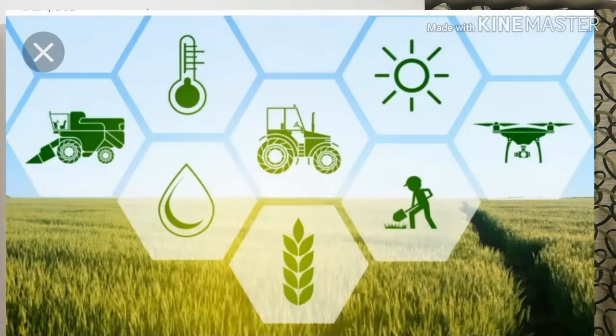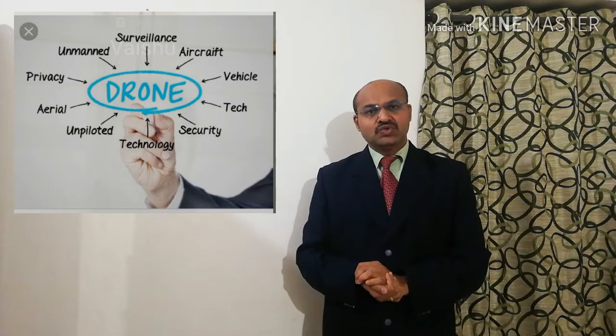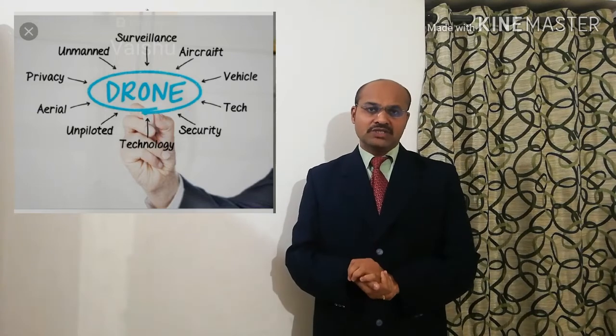Today we are using various technologies like AI — artificial intelligence — drone technology, and also GPS systems and other technologies for Indian agriculture. Drone technology is now at a very basic stage in India, and it can be used for various purposes in agriculture.